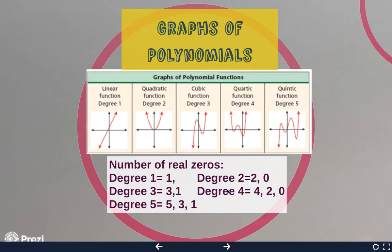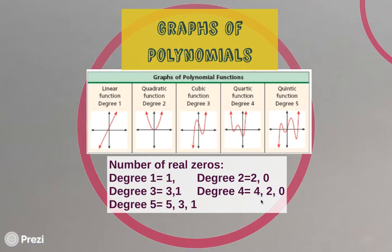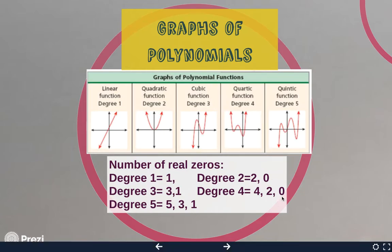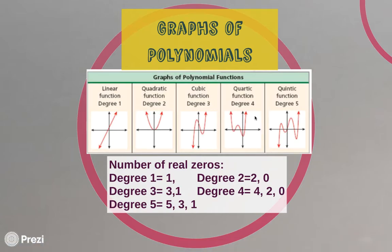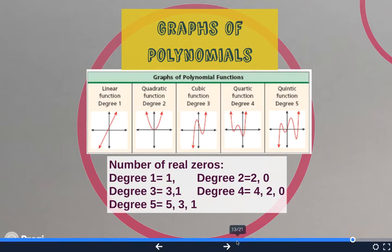For even degree functions — degree two and degree four: a degree two graph could have two or zero real roots, and a degree four graph could have four, two, or zero real roots. Even degrees have an even amount of real roots, including zero. Also, with even degree graphs, the arrows point in the same direction — both pointing upward, or both pointing downward. Keep that in mind when looking at even and odd degree functions.